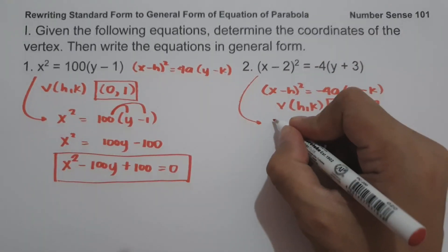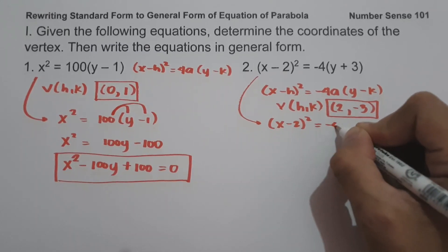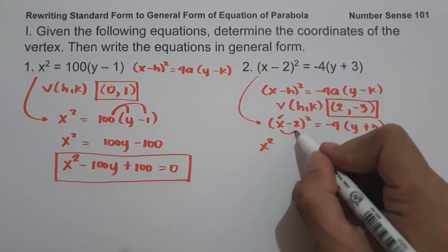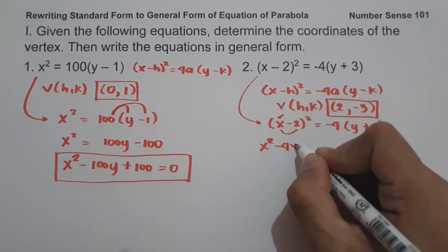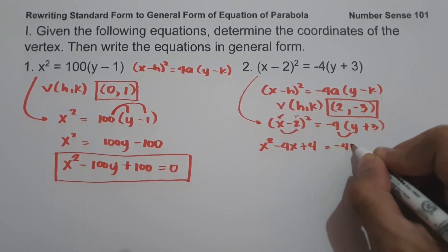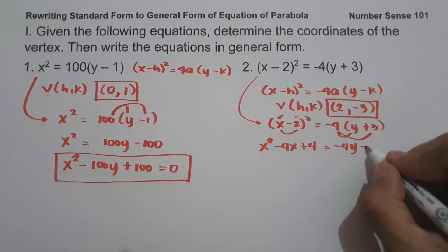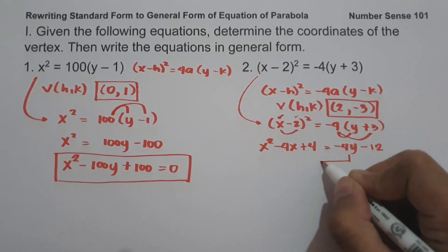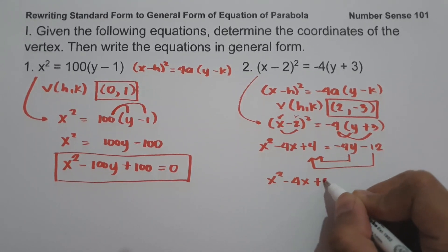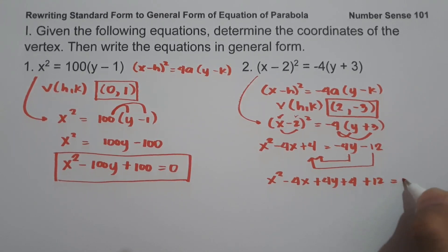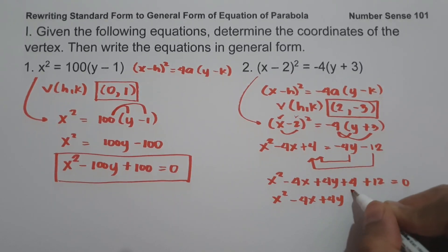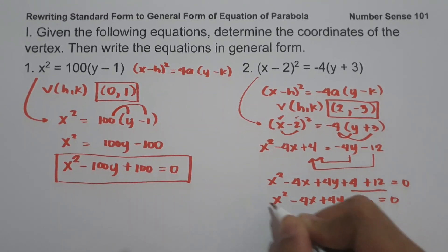And this will be our vertex. To convert to general form, we rewrite (x − 2)² = −4(y + 3). Expanding (x − 2)²: x times x is x², x times negative 2 times 2 is negative 4x, and negative 2 times itself is positive 4. Then negative 4 times y is negative 4y, and negative 4 times 3 is negative 12. Moving negative 4y and negative 12 to the other side: x² − 4x + 4y + 4 + 12 = 0, which simplifies to x² − 4x + 4y + 16 = 0.